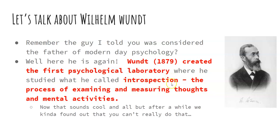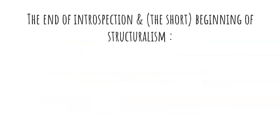Introspection is really interesting — you might still hear this word tossed around today. It is a process of examining and measuring your thoughts and mental activities. This sounds cool, but there's a problem: you can't really measure thoughts. How can you measure your feelings about a person against another person's feelings about a different person? It's really not possible, and Wundt and his colleagues came to find that this was a problem, and introspection eventually ended.